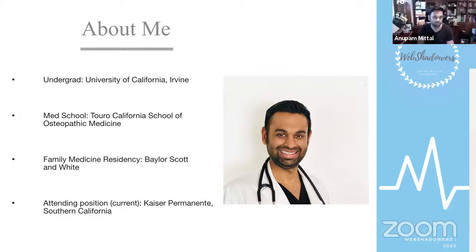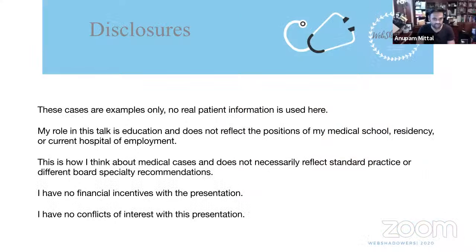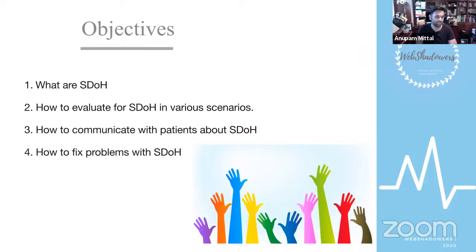A little bit about me: I went to college at UC Irvine in southern California, majored in biology, went straight into med school at Touro University in northern California, did my family medicine residency at one of the Baylor Scott and White programs in Austin, Texas, and currently work at Kaiser Permanente in southern California. Objectives today: what are social determinants of health, how to evaluate them in various scenarios, how to communicate with patients about them, and how to address problems.